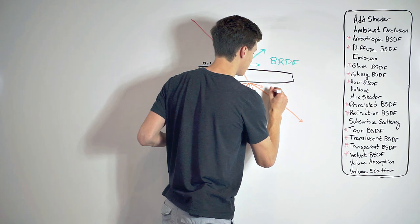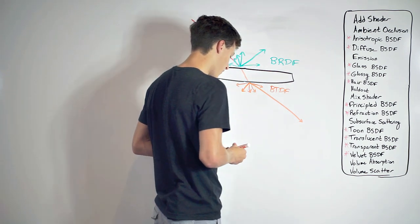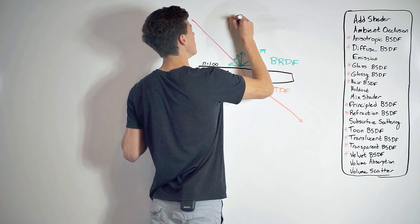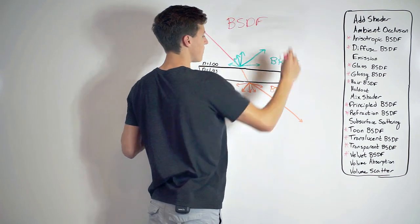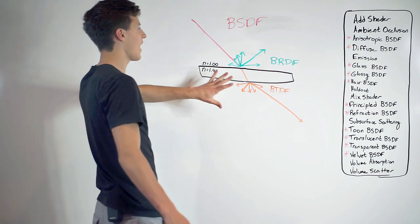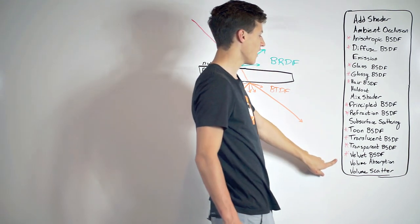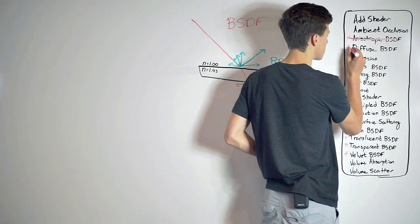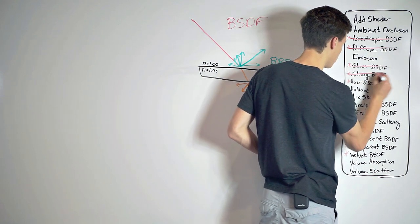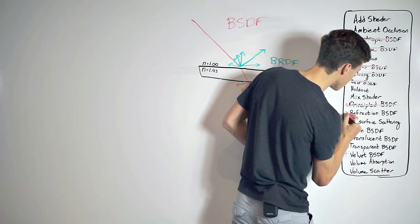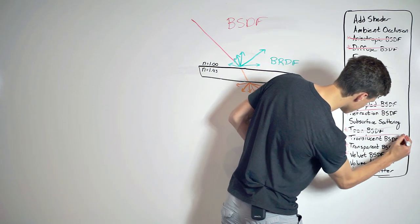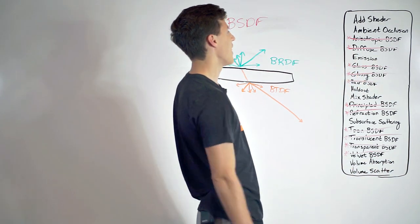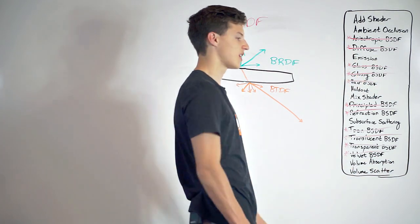So this is our BTDF down here. And overall, this entire function is the BSDF. So this exact model actually represents every single thing that has a BSDF next to its name here. So that includes anisotropic, diffuse, glass, glossy, hair, principled, refraction, translucent, transparent, and velvet. Wow. That's a lot of the shaders crossed off the list.